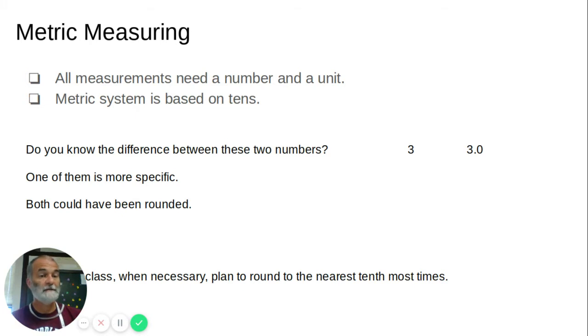Metric system is based on tens. So there are 10 millimeters in a centimeter. There's 10 centimeters in a decimeter. There's 10 decimeters in a meter. There's 10 meters in a decameter. There's 10 decameters in a hectometer. And then there's 10 hectometers in a kilometer. Are you confused yet? Well, it's all tens.